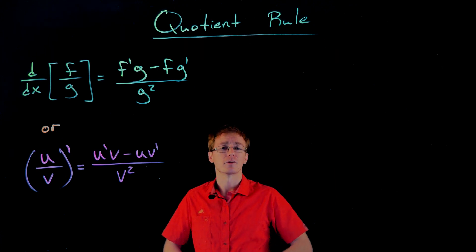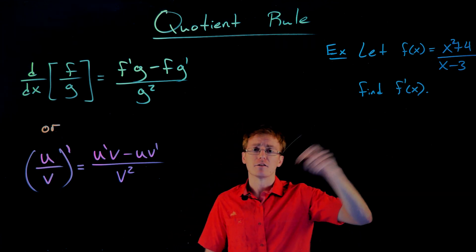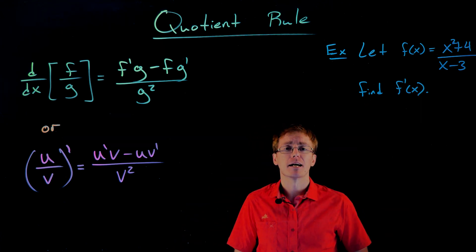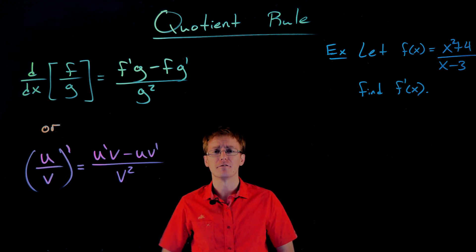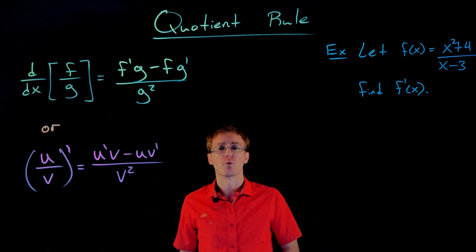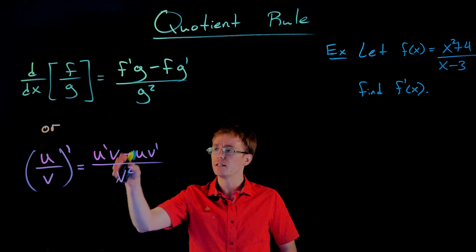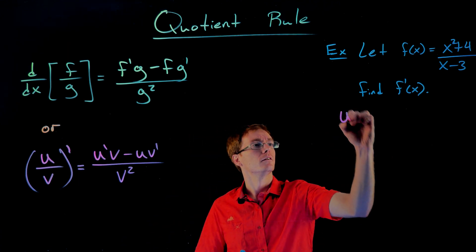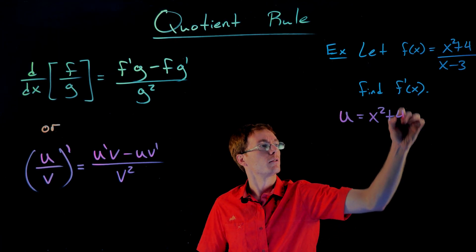So now let's go ahead and do a couple of examples using the quotient rule. In our first example, I want us to find the derivative of this function: we have x squared plus 4 in the numerator and x minus 3 in the denominator. Looking at our quotient rule formulas, we're going to want to use the u and v formula since f is already in use. We have to identify four components: u, v, u prime, and v prime. u is the function in our numerator, so it'll be x squared plus 4.